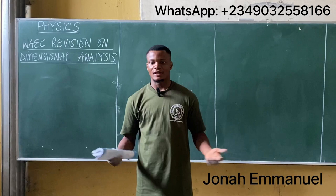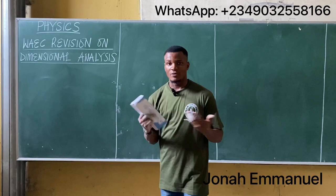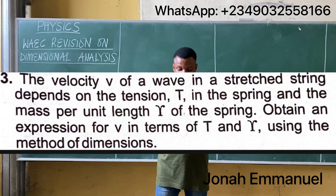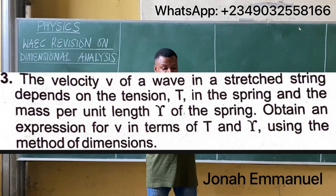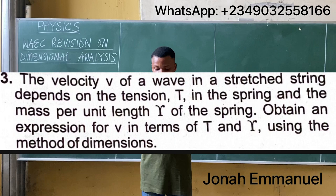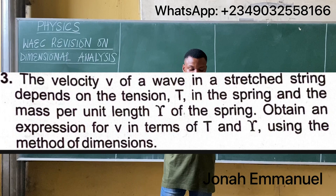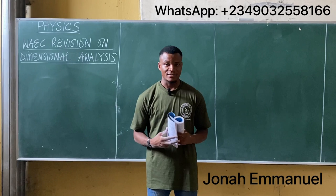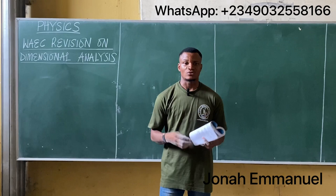Hello and welcome to today's class. We're looking at a wave physics question on dimensional analysis, trying to solve questions on dimensional analysis. This question says the velocity v of a wave in a stressed string depends on the tension t in the string and the mass per unit length, symbol gamma, of the string. Obtain an expression for v in terms of t and gamma using the method of dimensions.